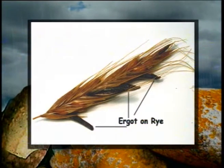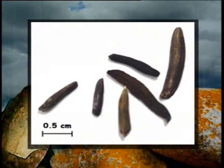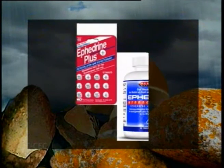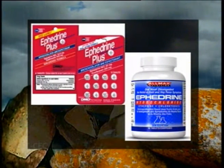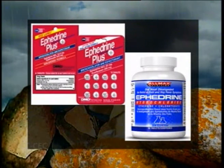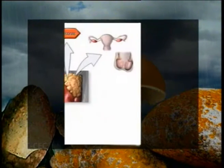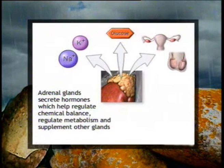The sclerotia of Claviceps purpurea contain some alkaloids which are the source of powerful and important drugs used in childbirth. Another important drug is ephedrine, which is used in the treatment of asthma and nasal troubles and is synthesized from benzaldehyde by the action of yeasts. Fungi are also known to produce steroids — the adrenal and gonadal hormones and their derivatives.